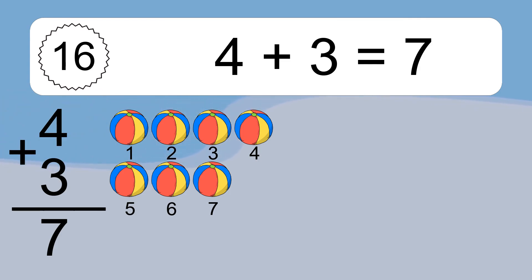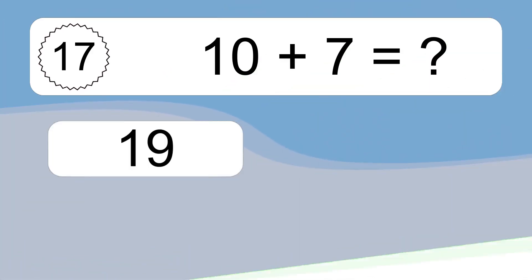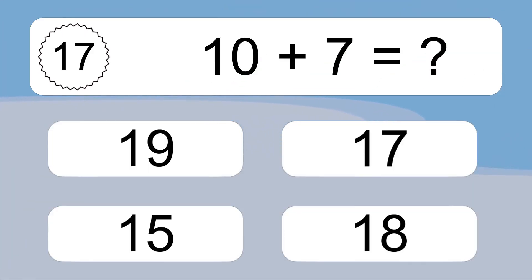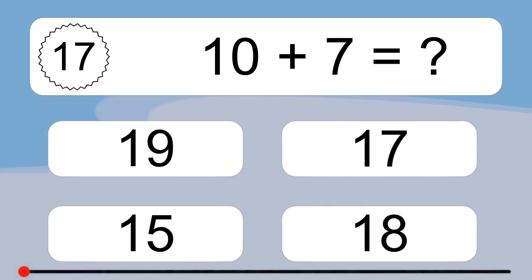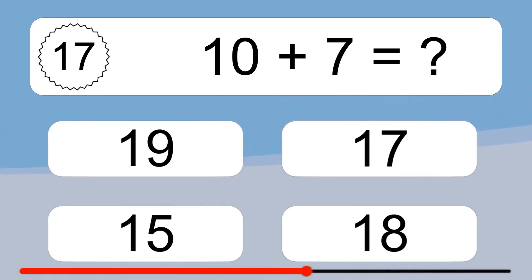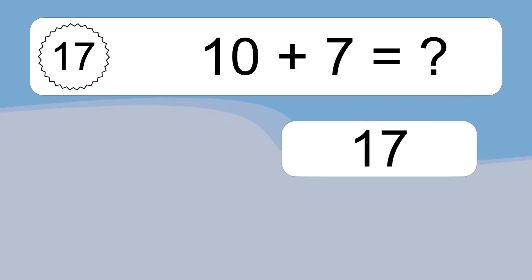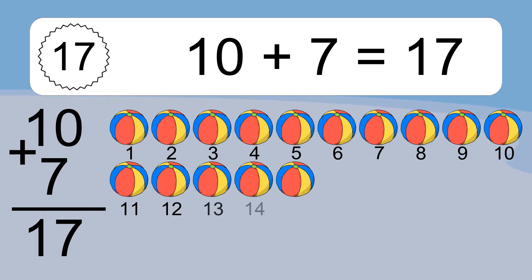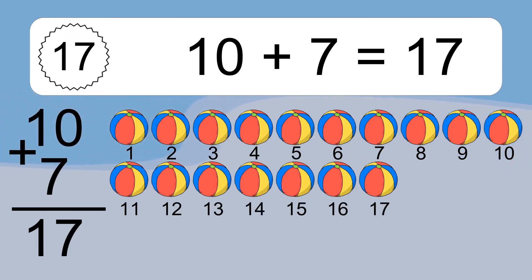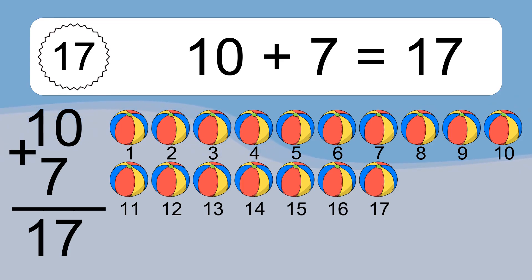Let's count it: 1, 2, 3, 4, 5, 6, 7, 9, 10. Let's count it: 1, 2, 3, 4, 5, 6, 7, 8, 9, 10, 11, 12, 13, 14, 15, 16, 17.